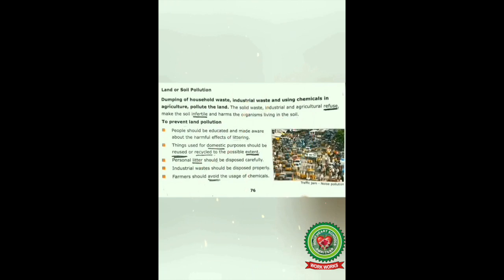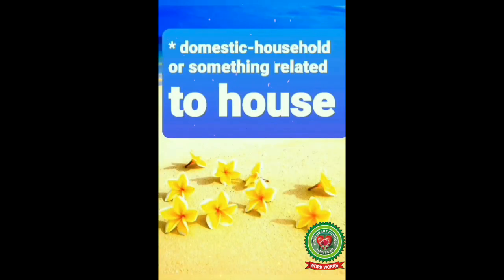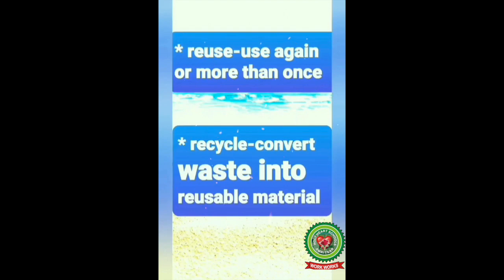To prevent land pollution: first, people should be educated and made aware about the harmful effects of littering. Second, things used for domestic purposes should be reused and recycled to the possible extent. Students, underline the word 'domestic,' which means household or something related to the house. 'Reuse' means use again or more than once. 'Recycle' means convert waste into reusable material.